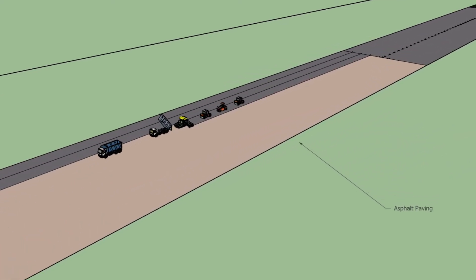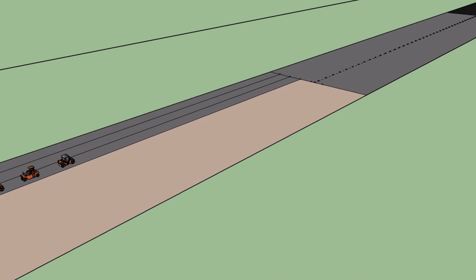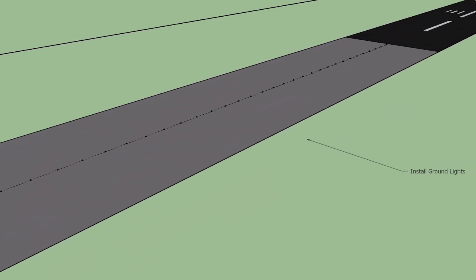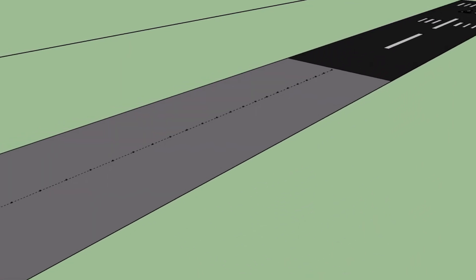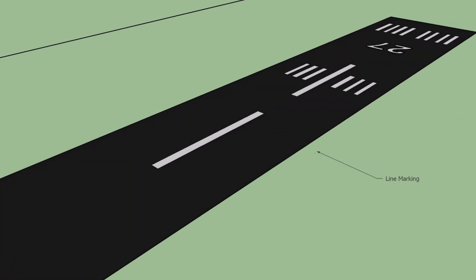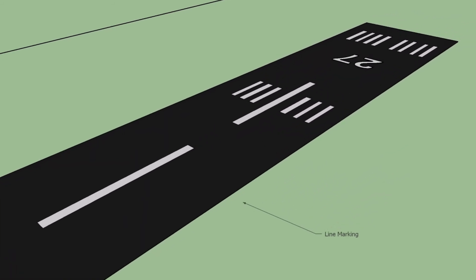Lay and compact asphalt pavement. Core drill and install ground lights. Carry out line markings.